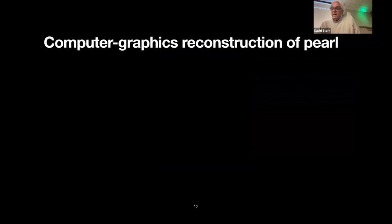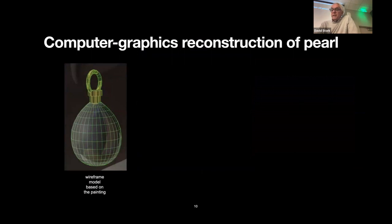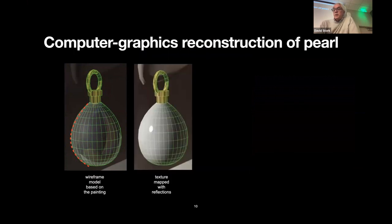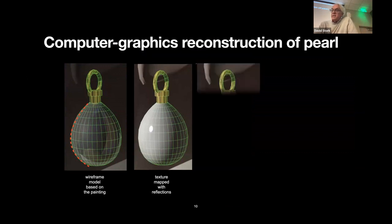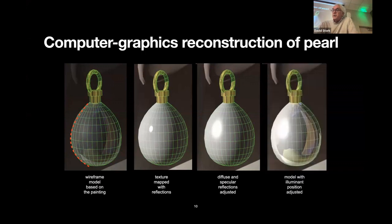Now for the model-dependent methods. I took a high-resolution photograph of the pearl in the painting and could thus describe mathematically its occluding contour. We can then confidently assume the pearl is cylindrically symmetric. We build a full 3D computer graphics model of the pearl, texture map it, put the white on it, and adjust the relative intensities of the diffuse and matte reflections and the highlight reflections. We then adjust the position of the virtual illumination until the rendered pearl matches the painting as closely as possible, which turns out to be 150 plus or minus 4 degrees.